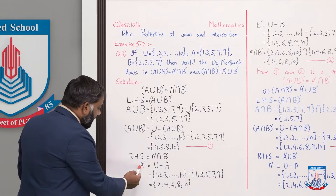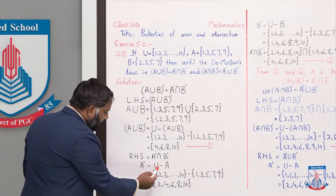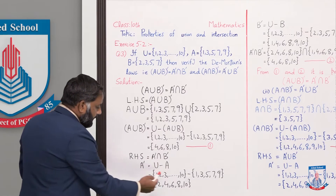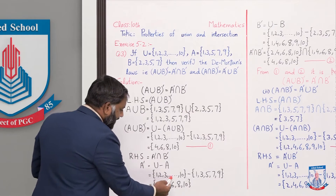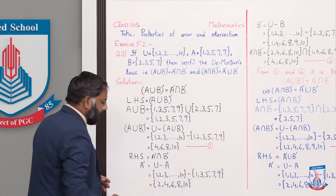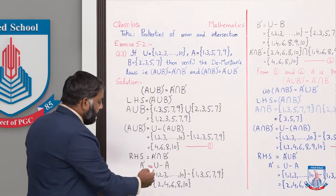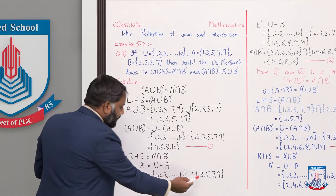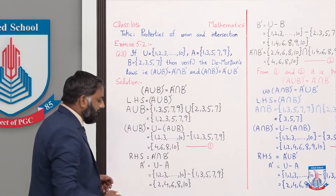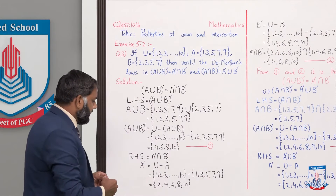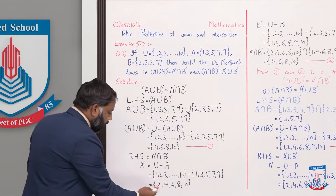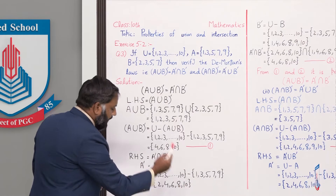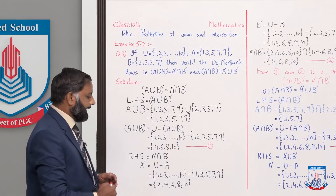A' = U minus A. We write the universal set minus set A. The elements of the universal set that are not in set A are: {2, 4, 6, 8, 10}.